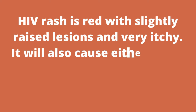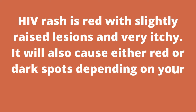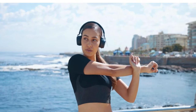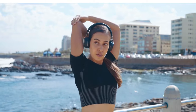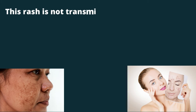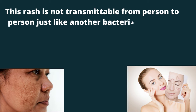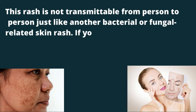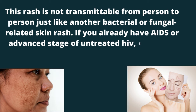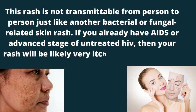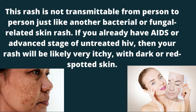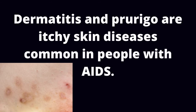Is HIV rash itchy or not? HIV rash is red with slightly raised lesions and very itchy. It will also cause either red or dark spots depending on your skin color. It can cover part or the whole of your body depending on how serious it is. This rash is not transmittable from person to person, unlike bacterial or fungal-related skin rash. If you already have AIDS or an advanced stage of untreated HIV, your rash will likely be very itchy with dark or red-spotted skin. Dermatitis and prurigo are itchy skin diseases common in people with AIDS.